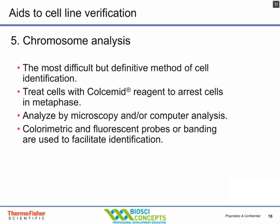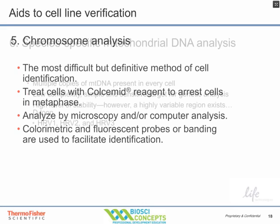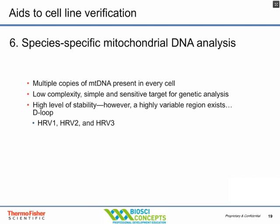One important caveat: because we're normally growing cells that are cancerous or otherwise abnormal, the numbers of chromosomes can vary between in vivo and in vitro. Another good approach is mitochondrial DNA analysis, because mitochondrial DNA is low-complexity with a high level of stability, but there are known variable regions where probes can be made. There are several hypervariable regions within mitochondrial DNA that are worth examining.